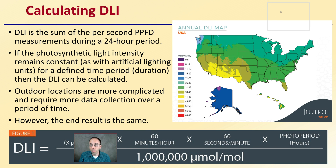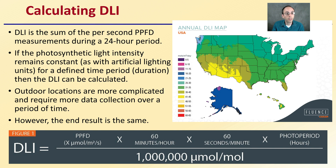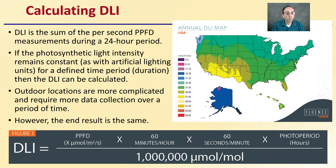When going through the calculation process, DLI is the sum of the per-second PPFD — that's photosynthetic photon flux density — measurements during a 24-hour period. If the photosynthetic light intensity remains constant, as with artificial lighting units for a defined time period, then the DLI can easily be calculated. Because you have your lights on for a certain period of time producing a known PPFD, it makes the calculation fairly easy.